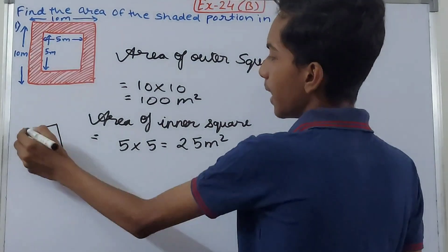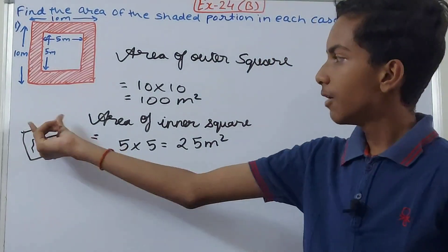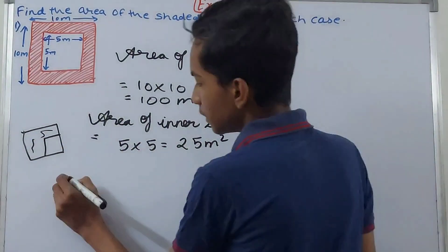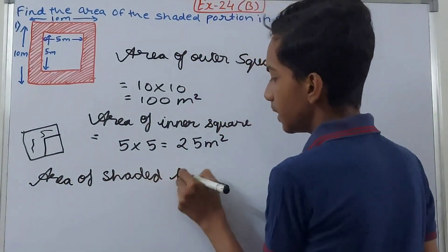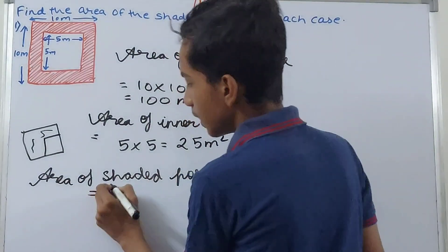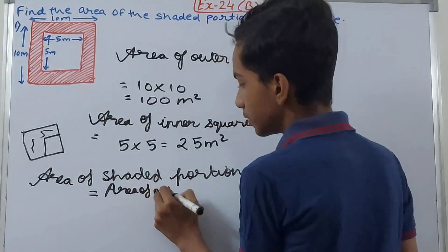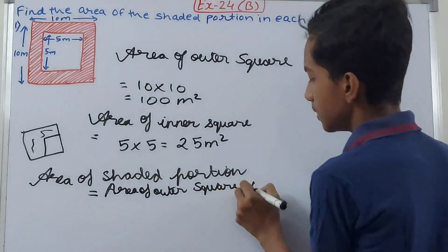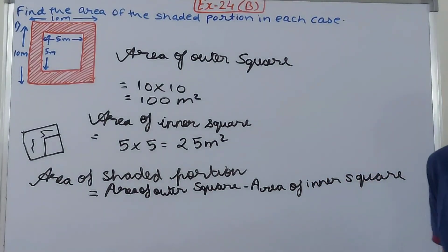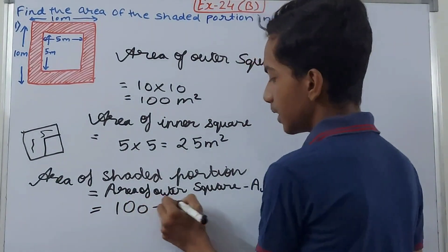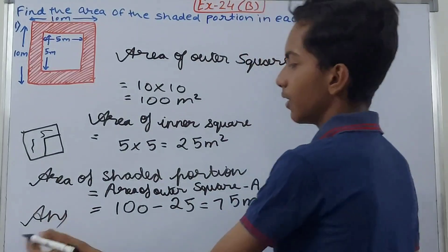Suppose this is the entire square and we take away the inner part — what remains is the area we need to find. So area of the shaded portion equals area of outer square minus area of inner square, which is 100 − 25 = 75 square meters. This is our answer: 75 square meters.